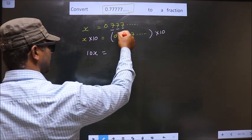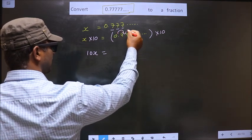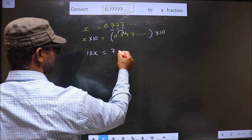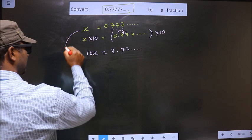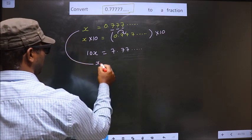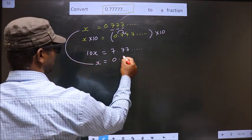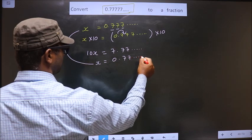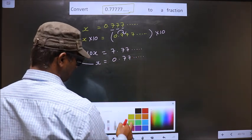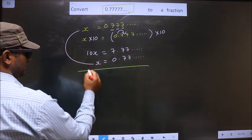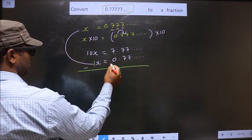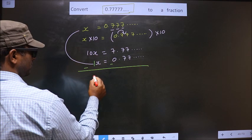Now I write this below: x equals 0.777 repeating. Now you should subtract these two. So 10x minus 1x is 9x, equal to - here these cancel out - you are left with 7 minus 0, which is 7.